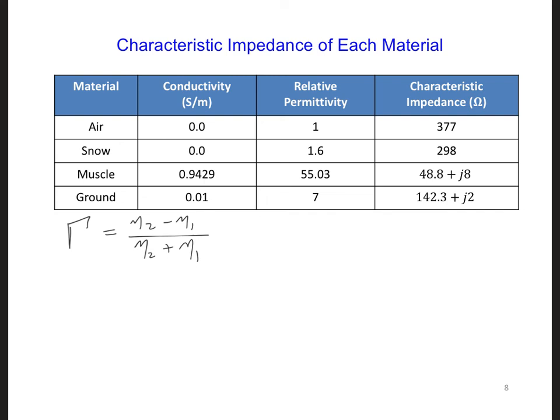I went ahead and calculated the characteristic impedance for each material in the model for you and that's right here. And I used the equation that's listed in table 7-1. So now just calculate the reflection coefficients of each material interface and predict what will happen to the wave as it propagates around in the grid.